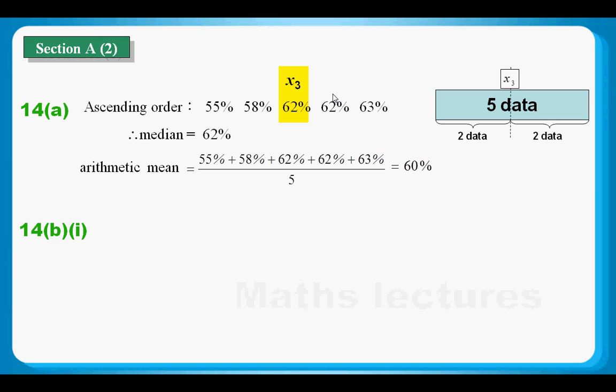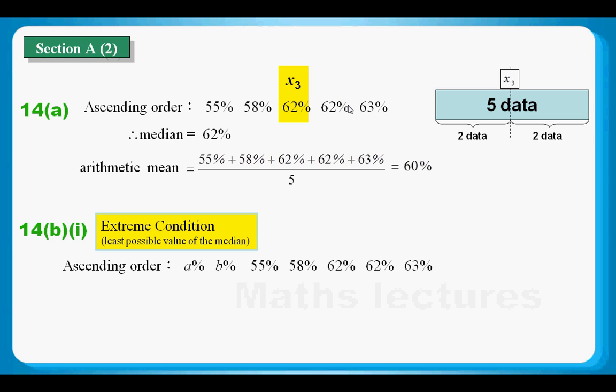B part 1 asks that we want to find the least possible value of the median. So I just gave you an extreme condition like this. Because A and B are still unknown, it can be many possible values. And in this case, I just treat these two numbers smaller than 55% or equal to 55%. Then I will have the least possible value of the median.